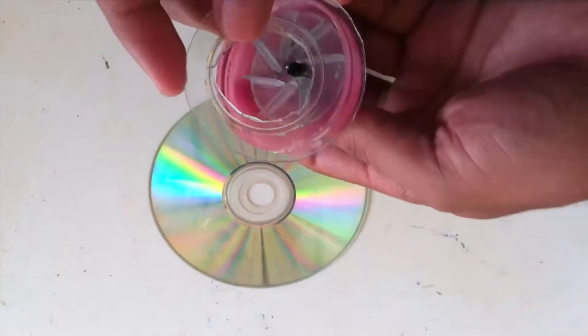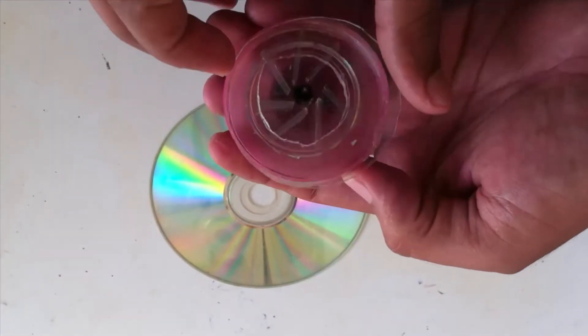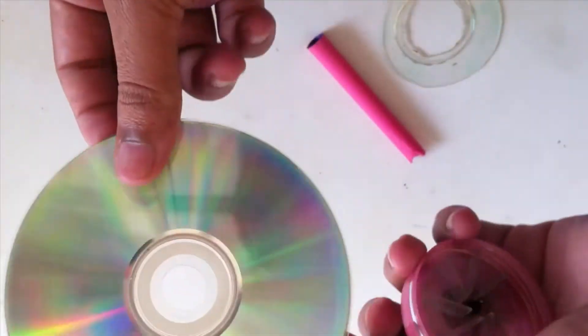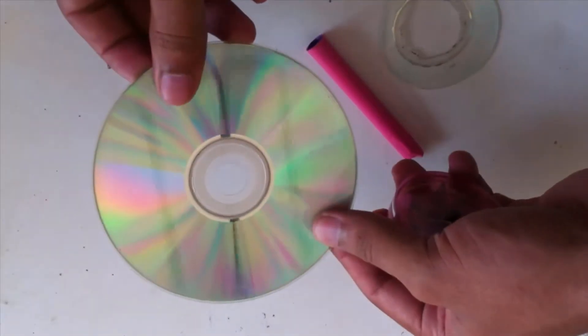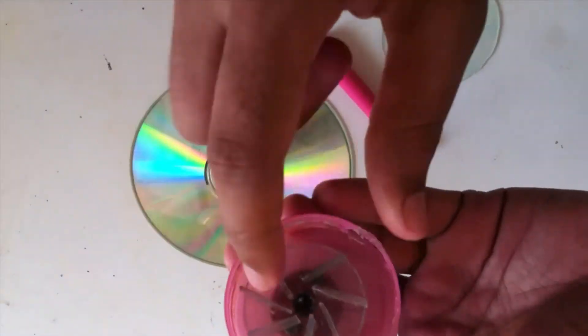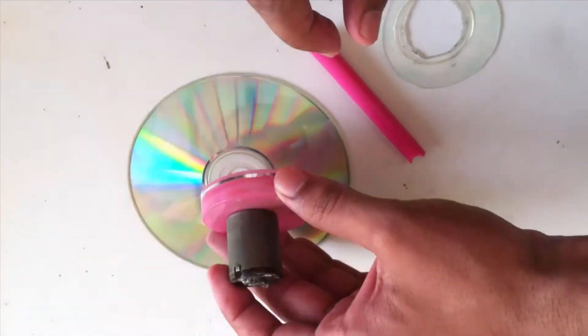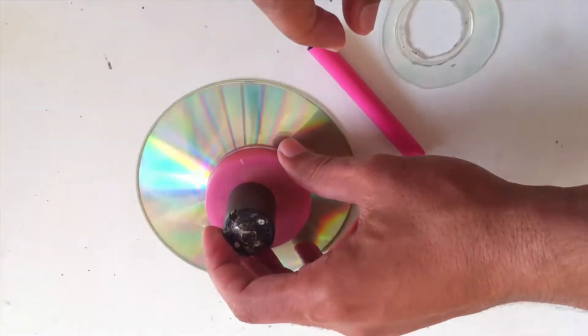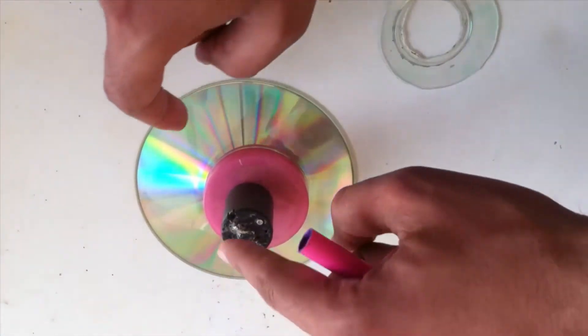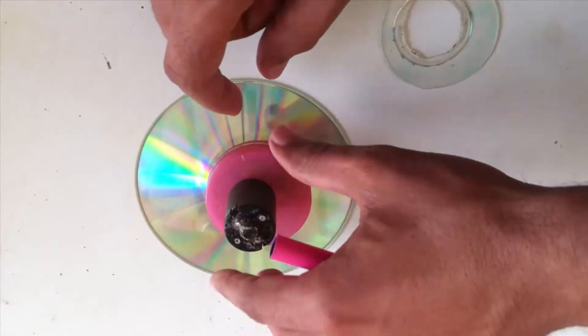Now we need to cover the face of this fan to make some pressure of water inside. So we need another disc and we can cut and mark according to the size of this lid. So we can use a pencil to mark this one.